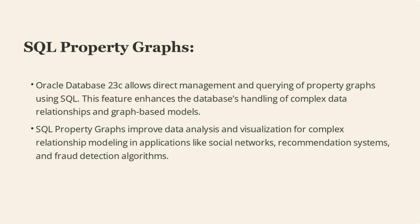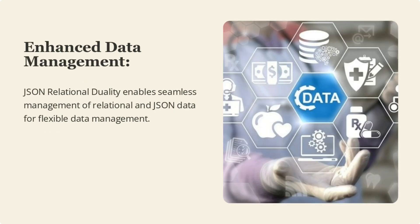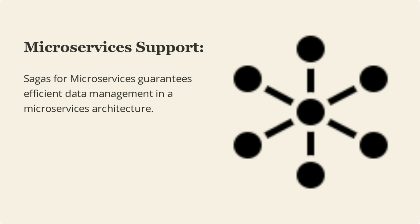SQL property graphs improve data analysis and visualization for complex relationship modeling in applications like social networks, recommendation systems, and fraud detection algorithms. JSON Relational Duality allows seamless management of both relational and JSON data. Microservices support via Sagas ensures efficient data management in a microservices architecture.